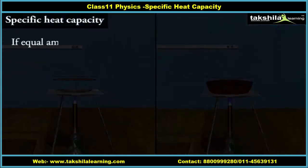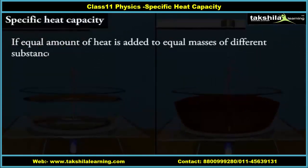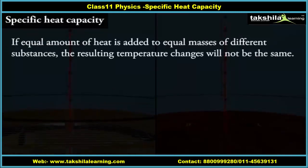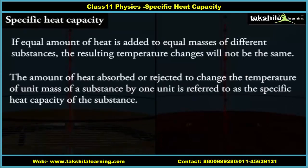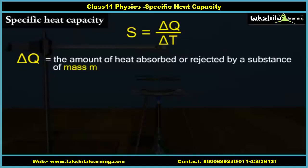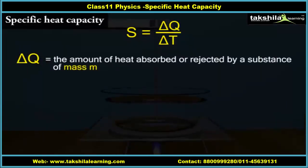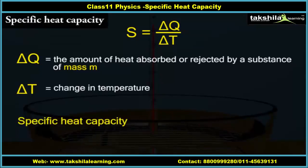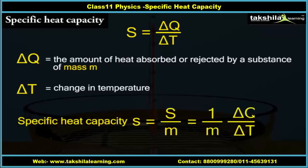If equal amounts of heat are added to equal masses of different substances, the resulting temperature changes will not be the same. This implies that every substance has a unique value for the amount of heat absorbed or rejected to change the temperature of unit mass by one unit. This quantity is referred to as the specific heat capacity of the substance. If ΔQ is the amount of heat absorbed or rejected by a substance of mass M when it undergoes a temperature change ΔT, then the specific heat capacity is given by s = S/M = (1/M)(ΔQ/ΔT).